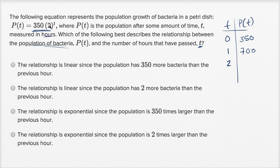When t is two, what's gonna be the population? Well two to the second power is four, four times 350 is gonna be 1200, plus 200 is gonna be 1400.